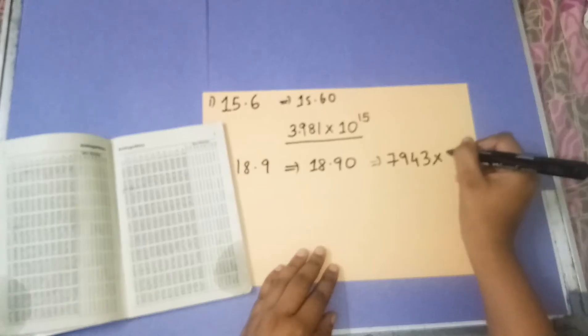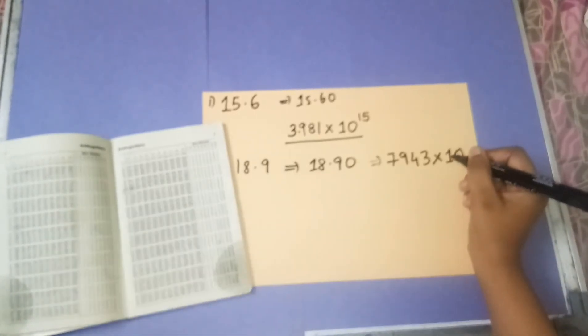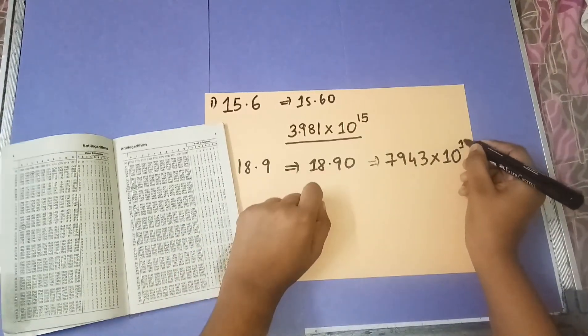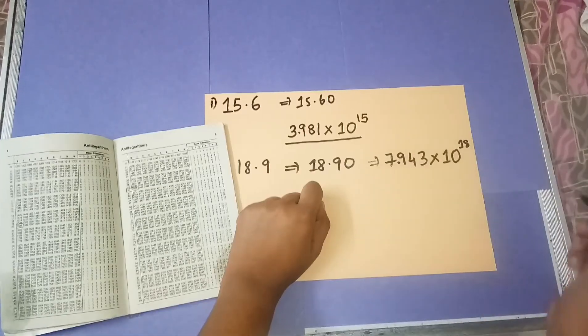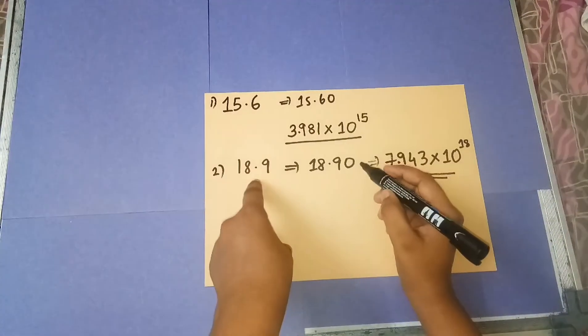Next, write 10 to the power of the whole number. In this case, it is 18. The final step is to add a decimal point after the first digit. So this is the antilog of 18.9.